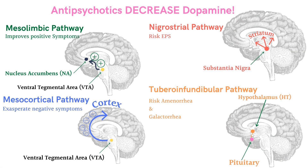Remember, antipsychotics decrease dopamine levels. In the mesolimbic pathway, positive symptoms are in the middle of the brain — positive inside. When we give antipsychotics, you're going to improve these positive symptoms. In the mesocortical pathway, think of cortex — negative symptoms are outside. Giving antipsychotics will exacerbate the negative symptoms. In the nigrostriatal pathway, giving antipsychotics risks the patient for EPS, including Parkinsonian symptoms and dystonia. In the tuberoinfundibular pathway, think prolactin secretion — risking amenorrhea and galactorrhea.